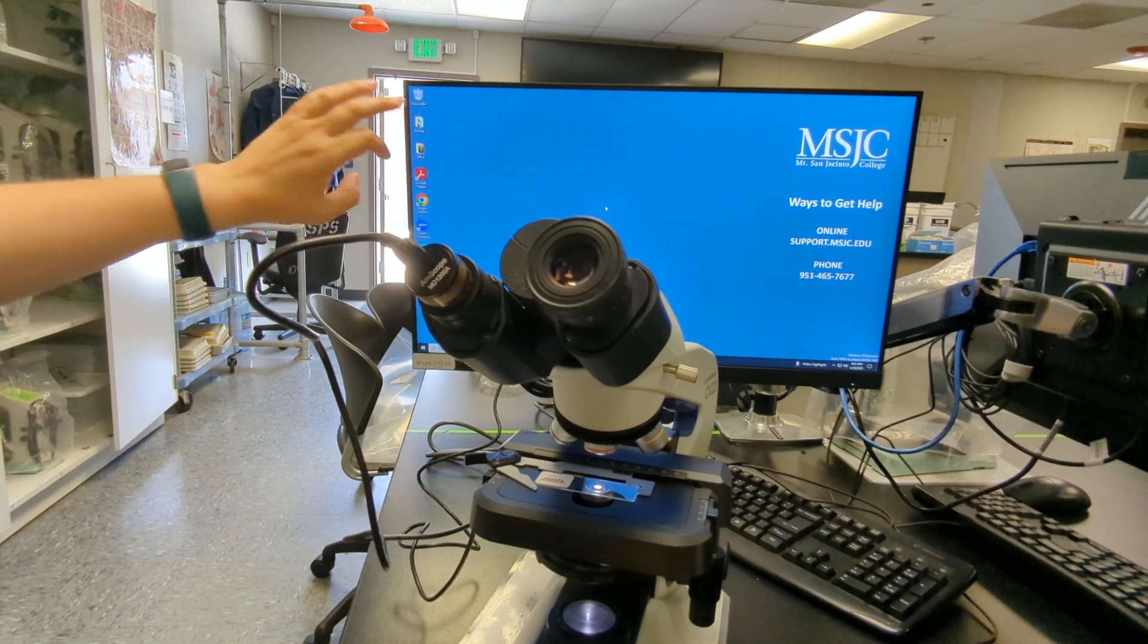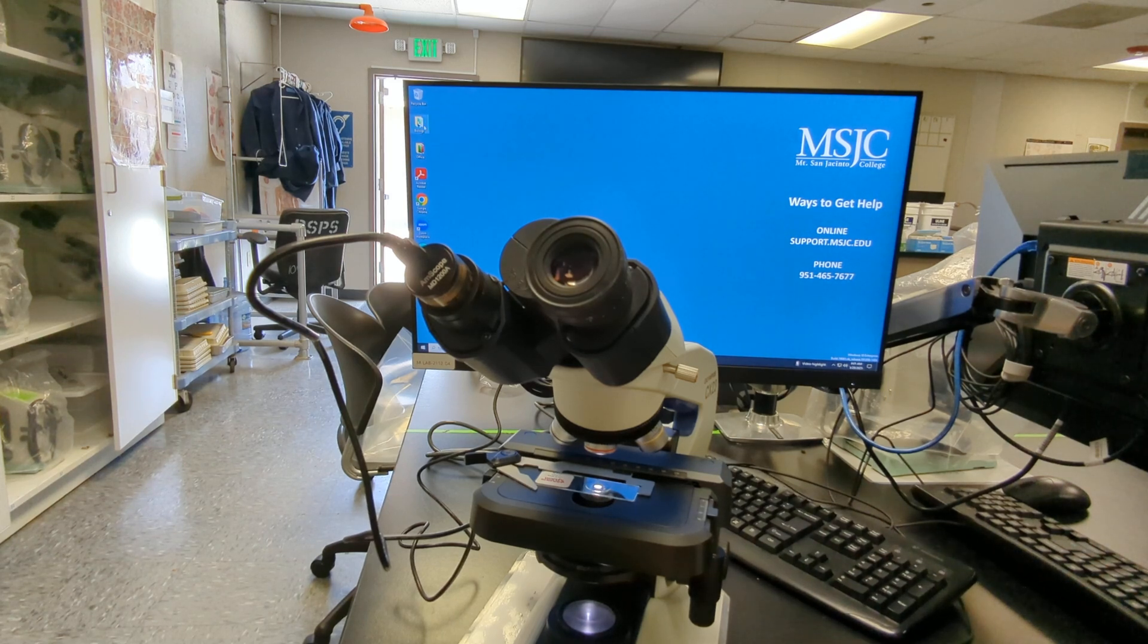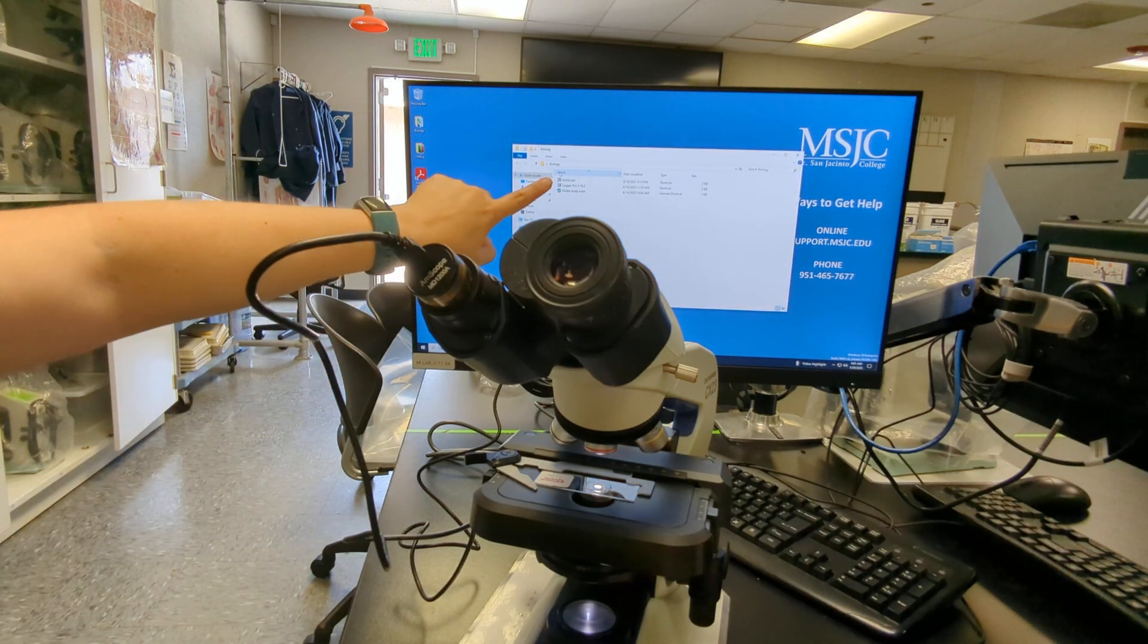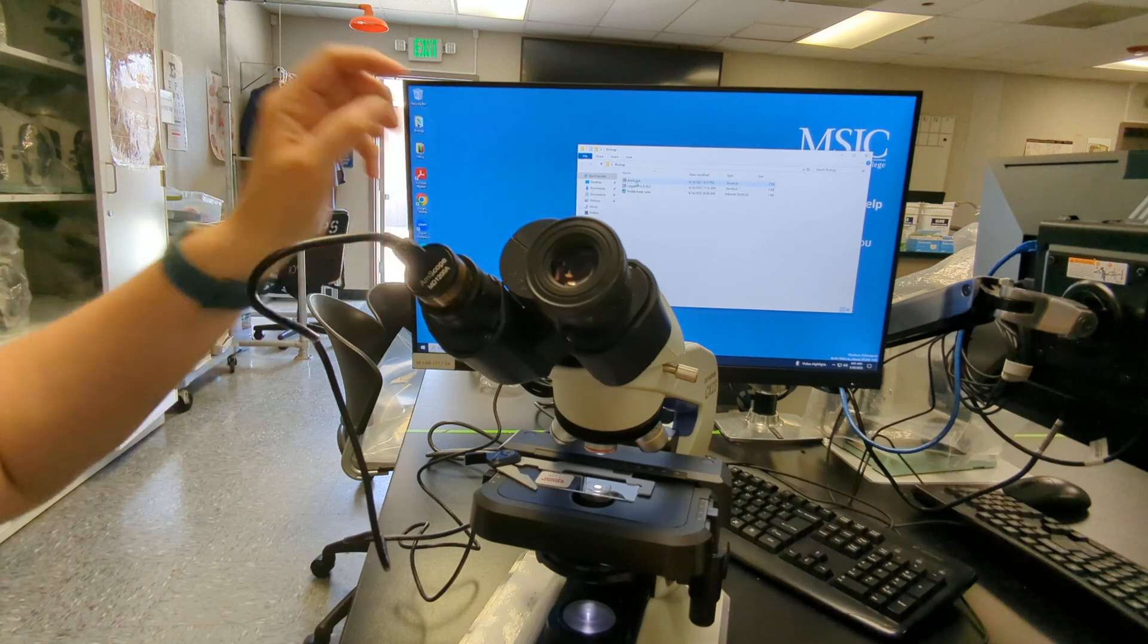On the computer, there's a biology folder. You're going to double click the biology folder. You're going to open the software called Amscope. Make sure you can see that, Amscope.